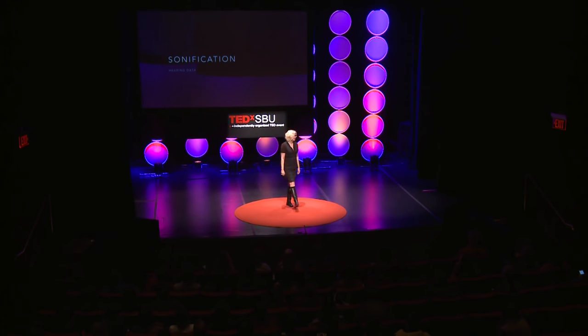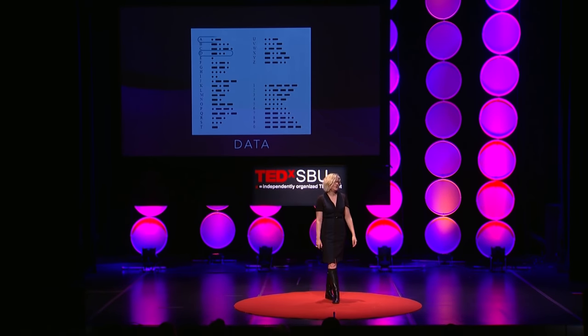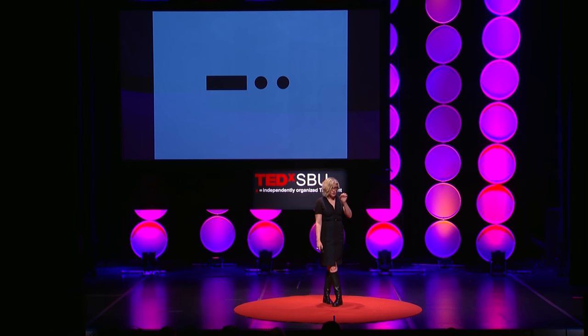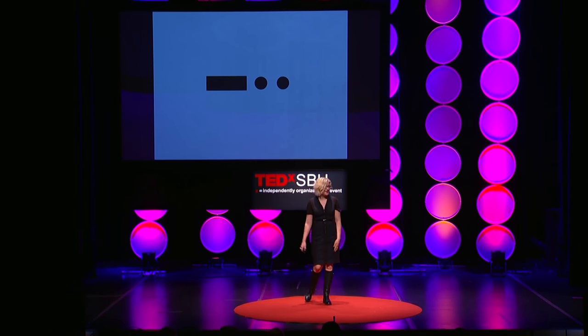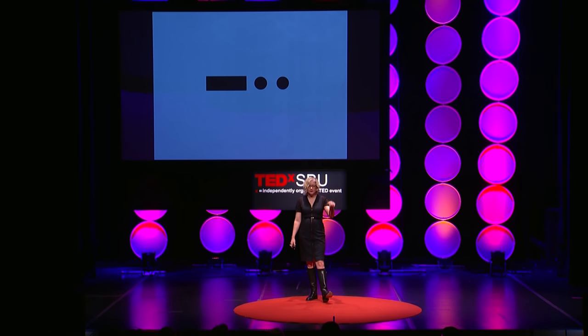That is Morse code. Morse code is a way of showing the alphabet in sound — D-A-T-A in Morse code. It's very simple: you just have dashes and dots. The dots are short sounds, the dashes are long sounds. But you can add a layer: if you have a human operator, the way that humans encode that data into sound can change — so instead of a uniform pattern, you could have subtle variations in timing.